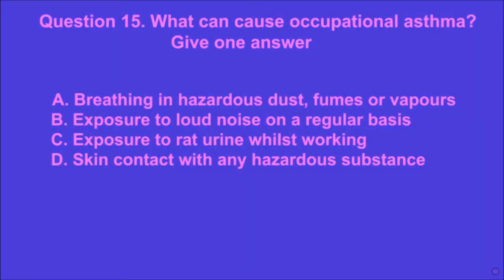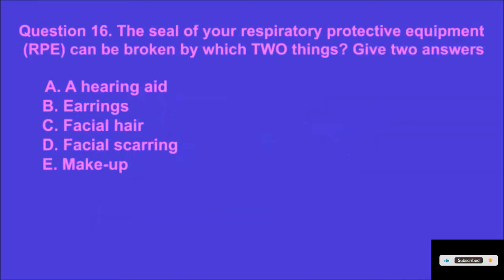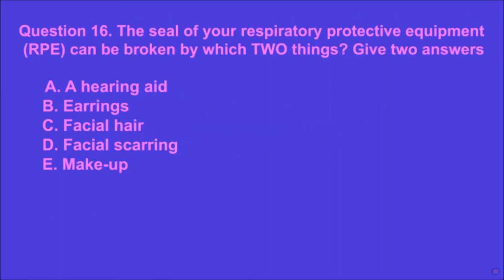Question 15: What can cause occupational asthma? Give one answer. A: breathing in hazardous dust, fumes or vapors, B: exposure to loud noise on a regular basis, C: exposure to rat urine whilst working, D: skin contact with any hazardous substance. A is the correct answer.